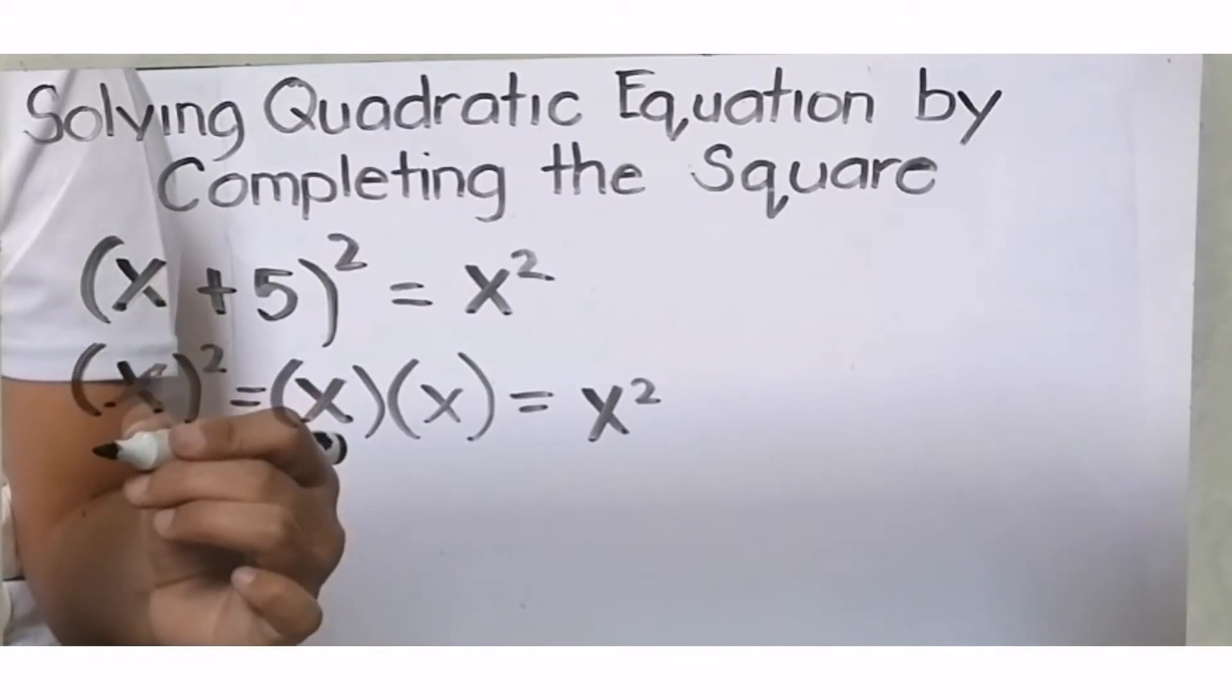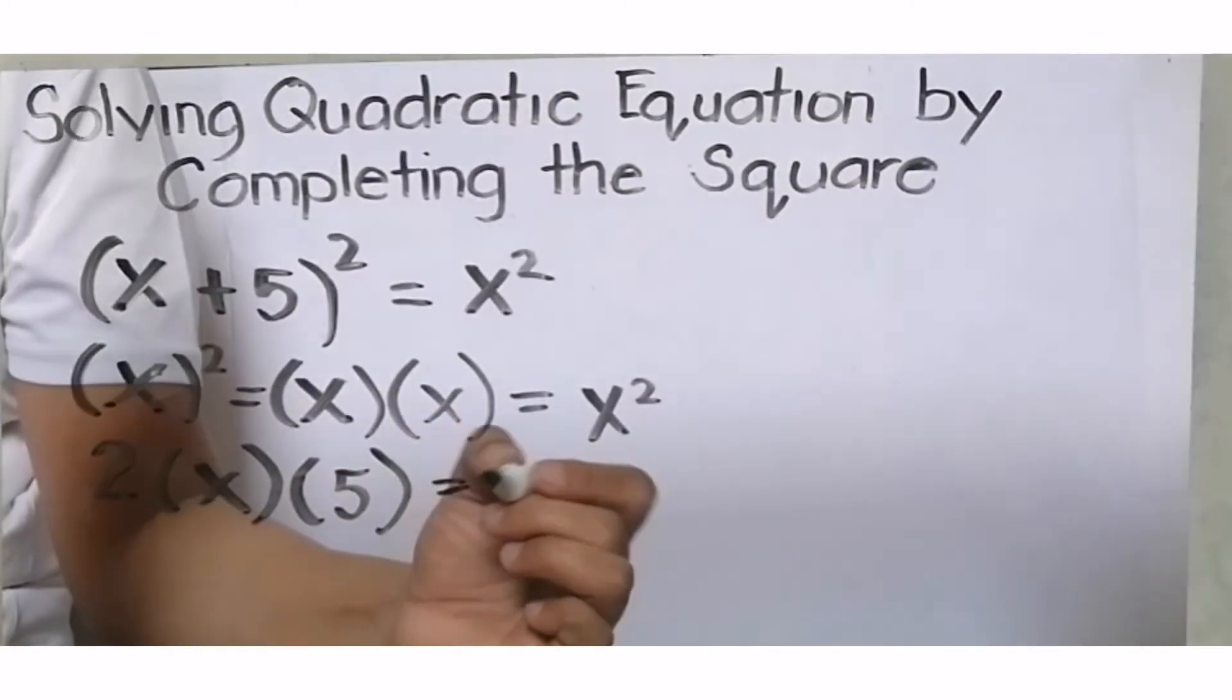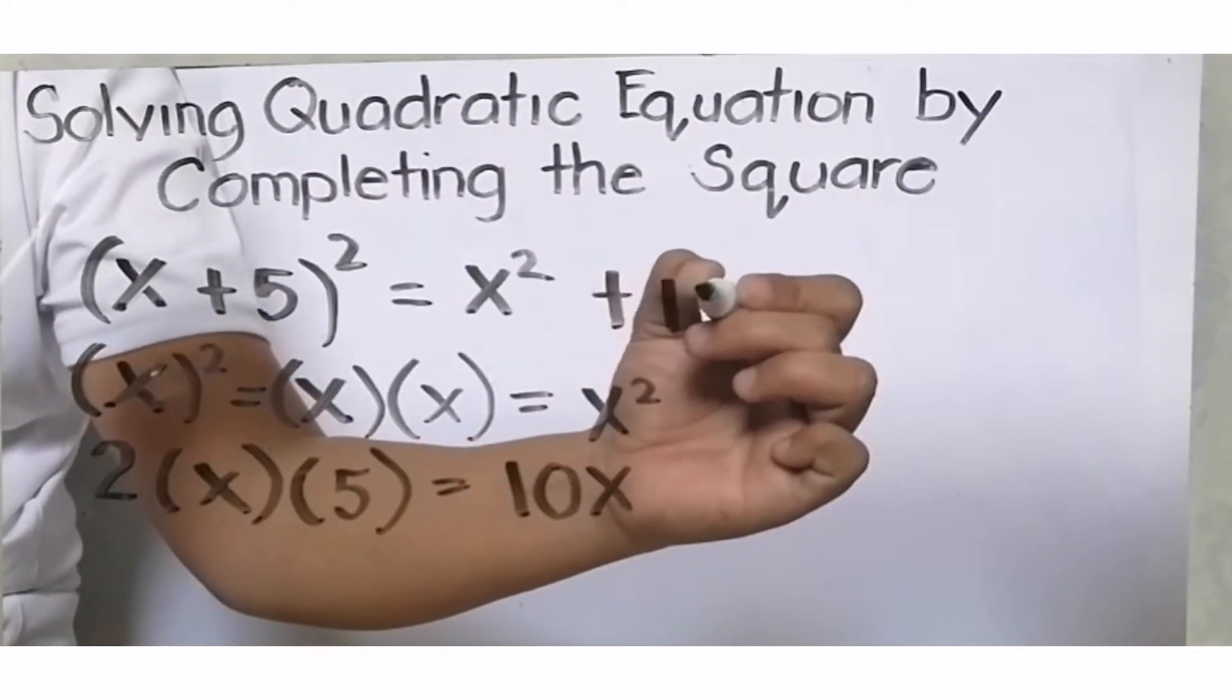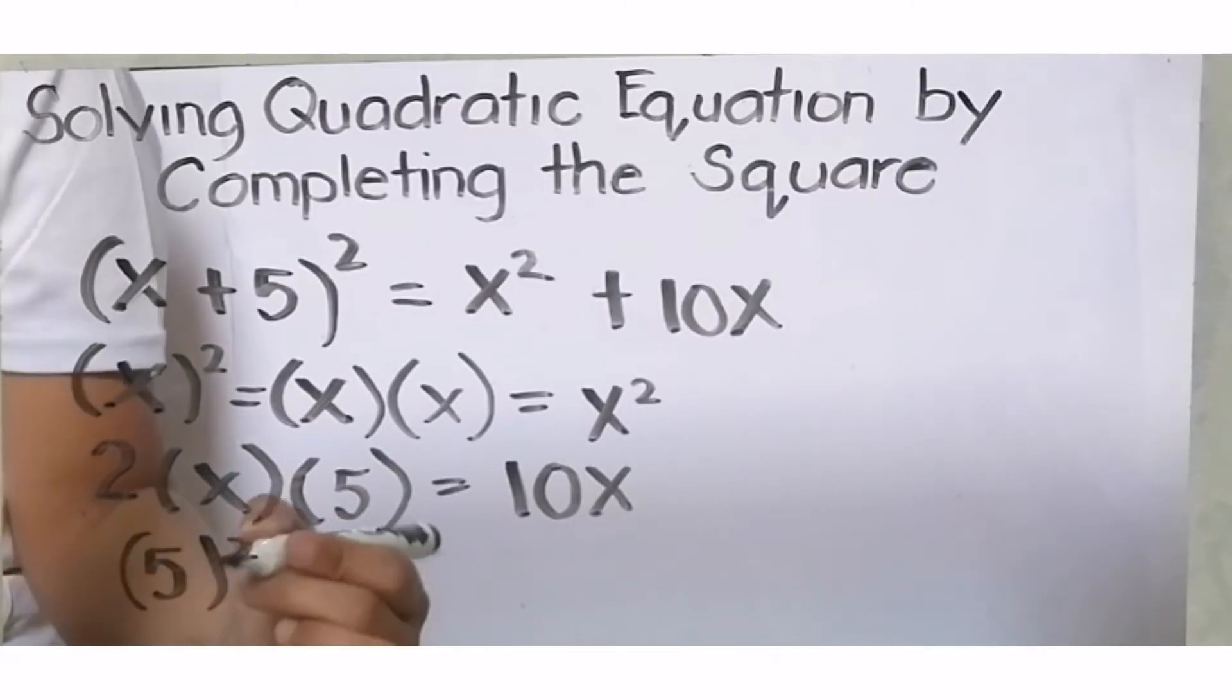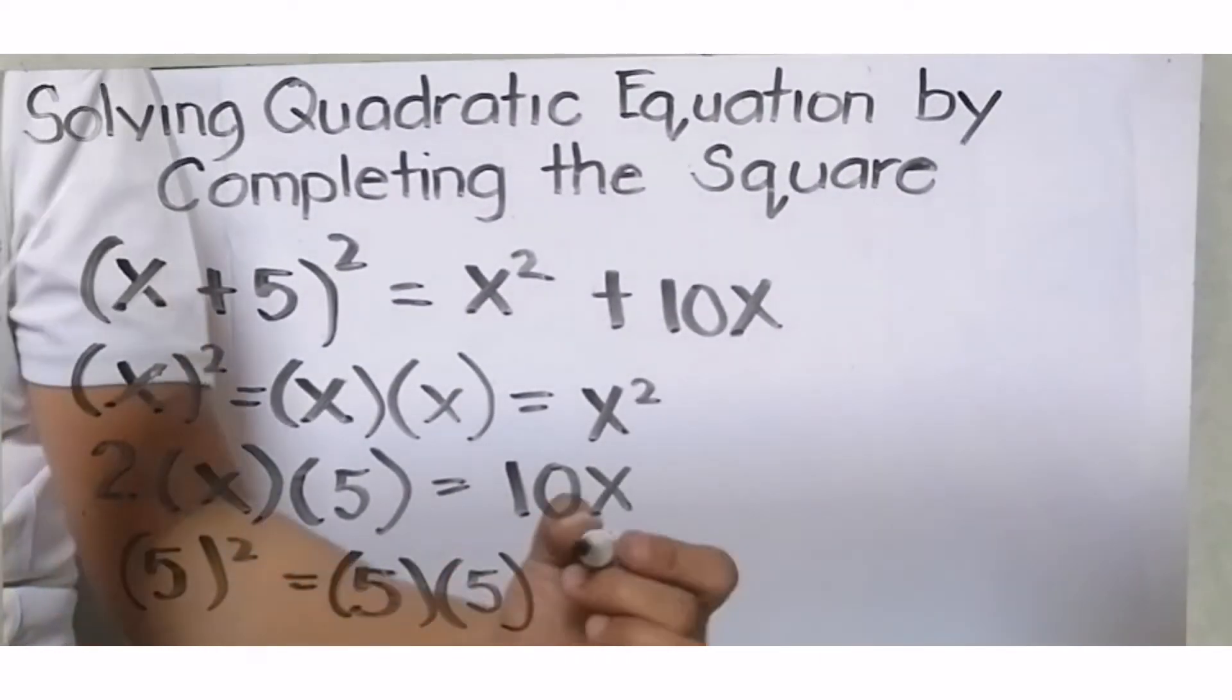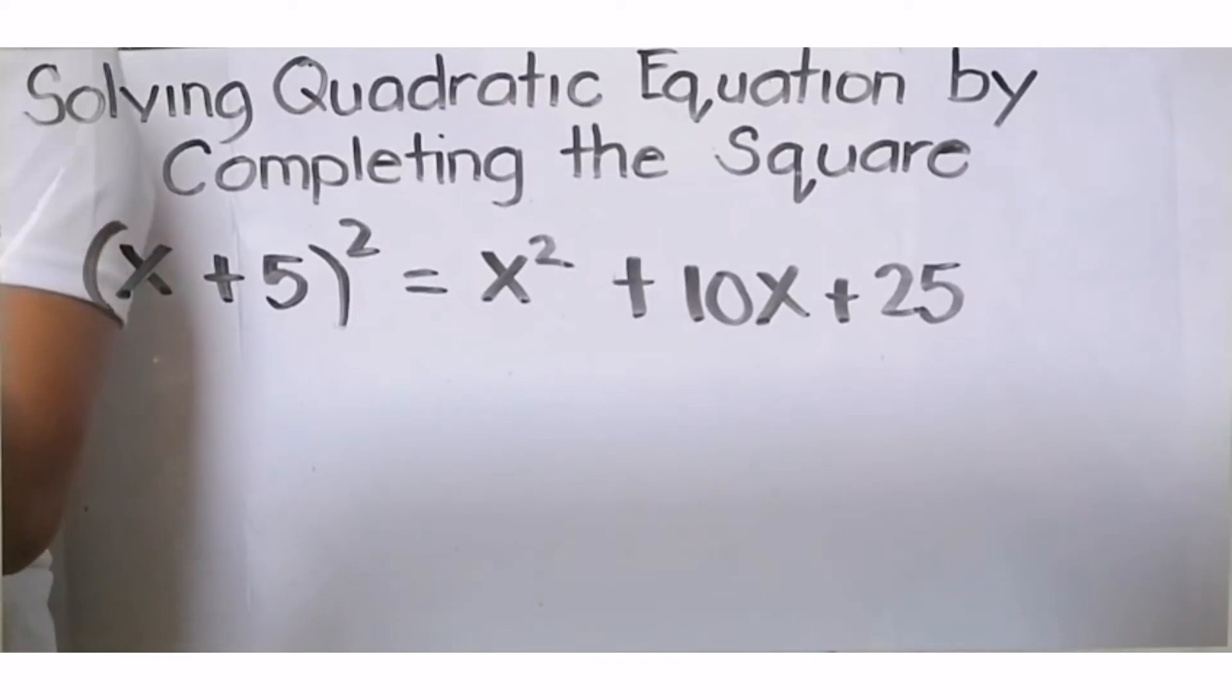When we square the first term, this is X times X. X times X equals X squared. That's the first thing we'll write. Next, step 2, double the product of the first term and the last term. 2 times X times 5. 2 times X is 2X, times 5 is 10X. That will be our middle term. The last one is square the last term, which is positive 5. Square means the same number multiplied by itself, like multiplying it by itself. 5 times 5 gives us 25.